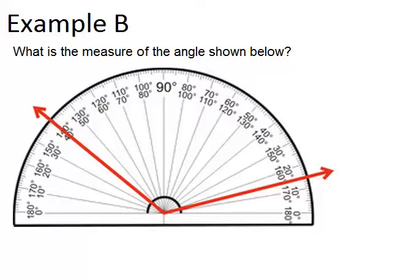We're starting with example B today. The first example asks, what is the measure of the angle shown below? We can see our angle in red lined up on the protractor, although neither of the rays that make the angle are lined up with a zero.